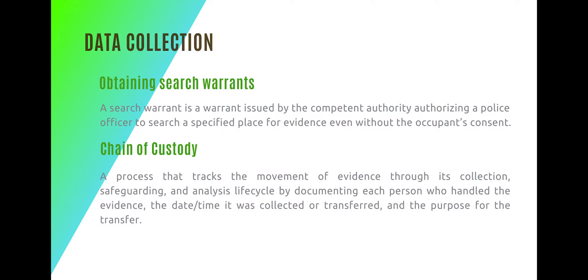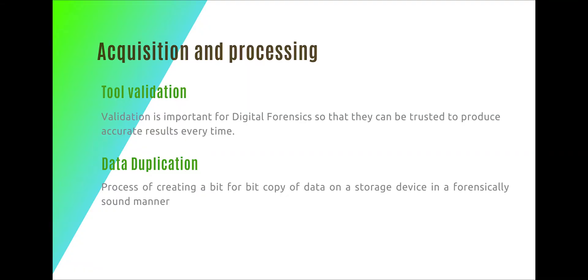There are a few main points during a digital forensic procedure. The first is the data collection phase, which mainly includes obtaining search authorities or search warrants, seizing the actual evidence, and documenting the chain of custody. The second step is acquiring and processing — here we validate the tools, obtain the hash of the evidence, and make a copy of the evidence before going into the analysis.